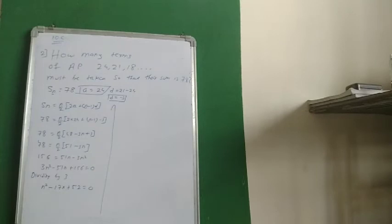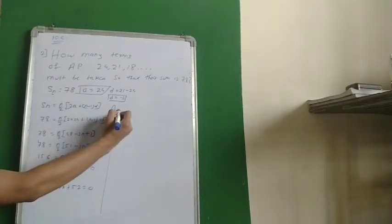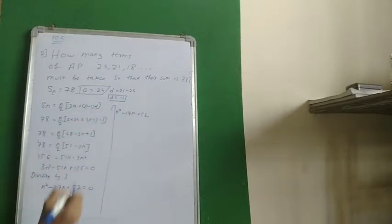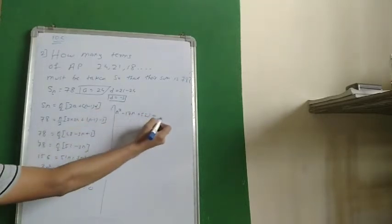Now, we have learnt the quadratic equation. We need to split. I'll write the whole equation again. N square minus 17N plus 52 is equal to 0.